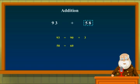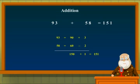So 58 can be written as 60 minus 2. Now all we need to do is add 90 and 60. What do we get? 150. To this, we add plus 3 and minus 2. That means we add 1 to this and we get 151 as the answer.